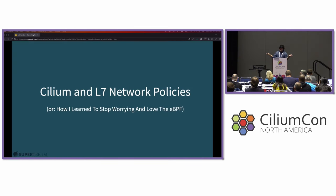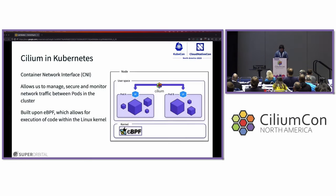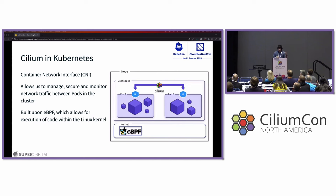Cilium and layer-7 network policies are how I learned to stop worrying and love the eBPF. Cilium is a CNI — an application that provides networking for pods in a Kubernetes cluster. It allows us to manage, secure, and monitor network traffic between pods in a cluster. It's built upon eBPF, which allows for execution of code within the Linux kernel.